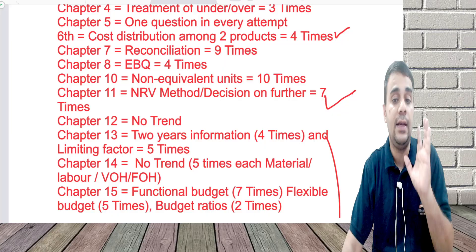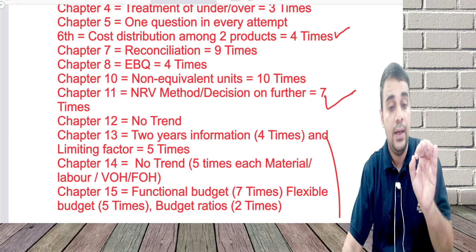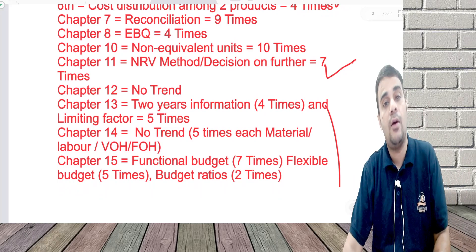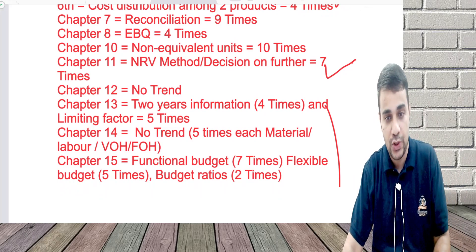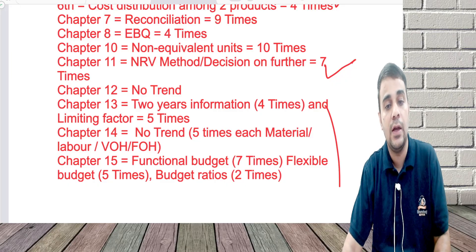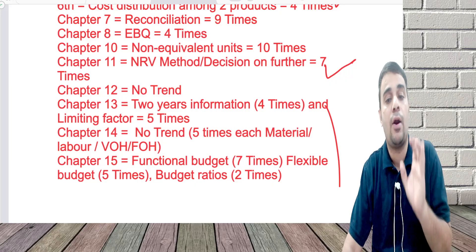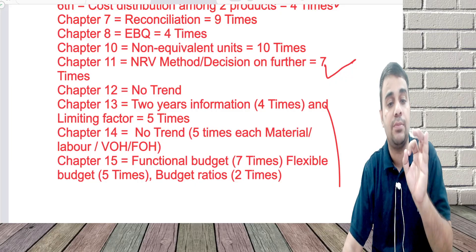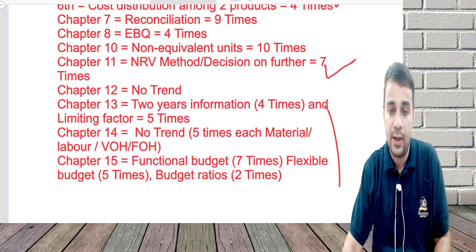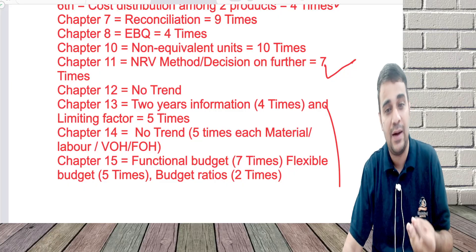Chapter 11: NRV method of distribution and a decision on further processing together have come seven times. If you still want to do more, by-product costing has come three to four times in the exam. Chapter 12 — I did not observe any major trend. Transport costing comes sometimes; they also ask hotel, hospital, and last time they asked cinema costing, so no major trend in Chapter 12.